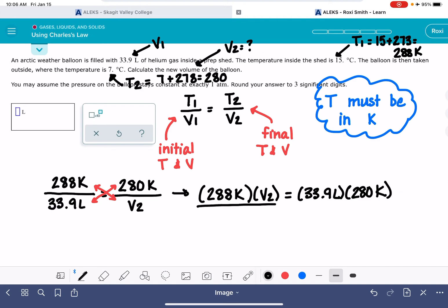If we divide both sides by 288 Kelvin, that's going to isolate the V2 variable. We'll go ahead and show how that's going to cancel and our Kelvin unit will cancel.